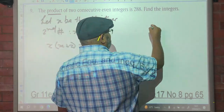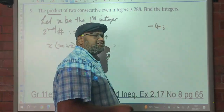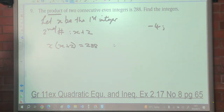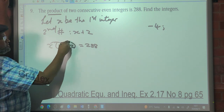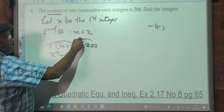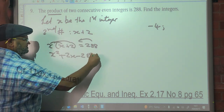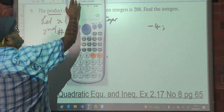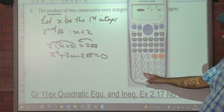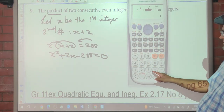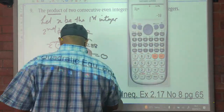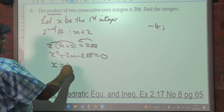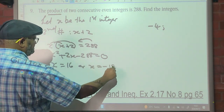Just to check — if the first number is negative 4, the next consecutive even number would be negative 2. Solving X times (X plus 2) equals 288 gives X squared plus 2X minus 288 equals 0. Again a quadratic equation. Taking it to the calculator with values 1, 2, negative 288, we get X equals 16 or X equals negative 18.